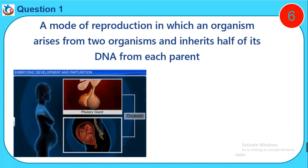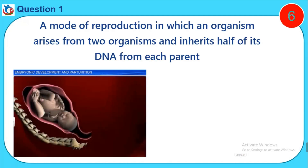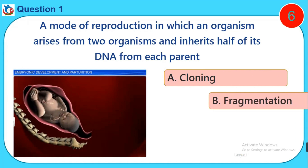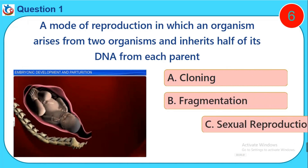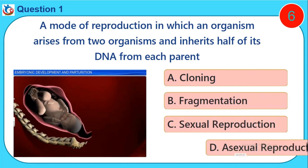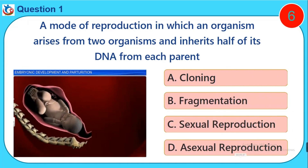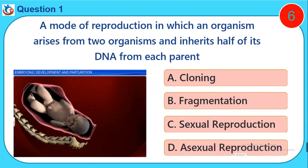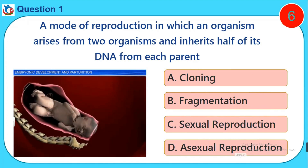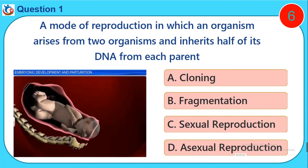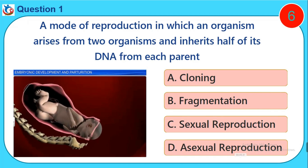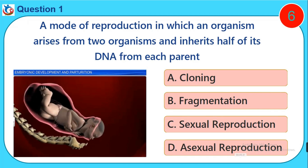Question one: A mode of reproduction in which an organism arises from two organisms and inherits half of its DNA from each parent is called dash. A) Cloning, B) Fragmentation, C) Sexual reproduction, D) Asexual reproduction.